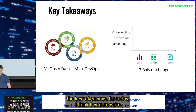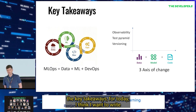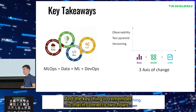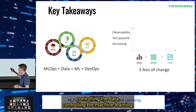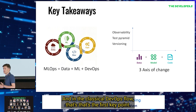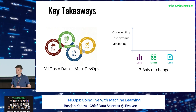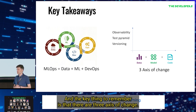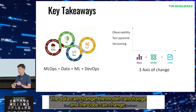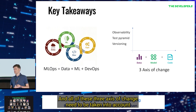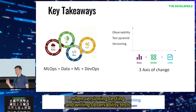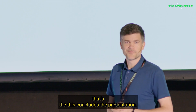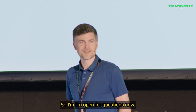So, in conclusion, the key takeaways for today — I think there are only two. The first is what is machine learning operations: it connects two flows — controlling the data, controlling the machine learning, and the classical DevOps flow. The second key point is how to make this operational: there are three axes of change — the data can change, the model can change, and the code can change. All three axes need to be taken into account when versioning, testing, and writing observability tests. That concludes the presentation. I'm open for questions now. Thank you very much.